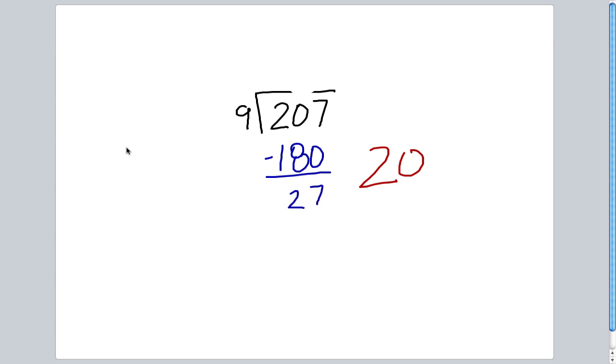And immediately now, I see that there are 3 9's in 27, which leaves me nothing left to get to my 207. Now, in just 2 steps, I have figured out that there are 23 9's in 207. Same problem, same process, just a different path to get there.